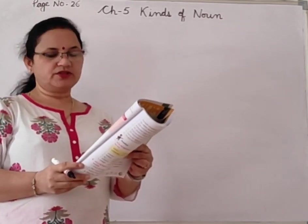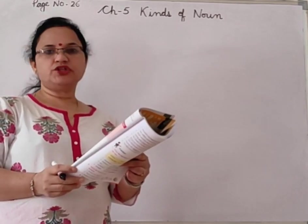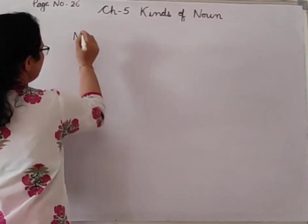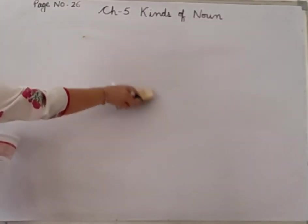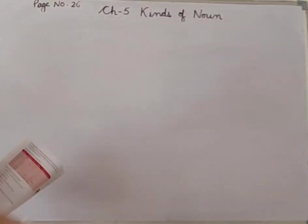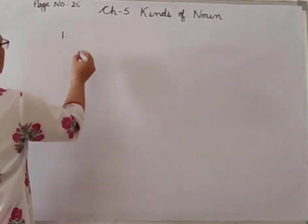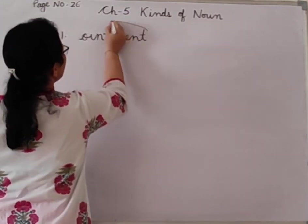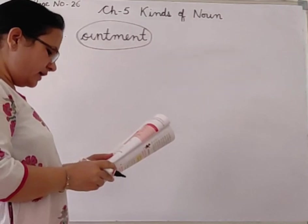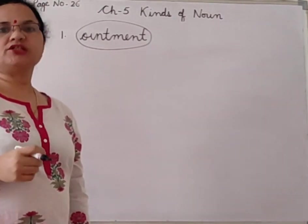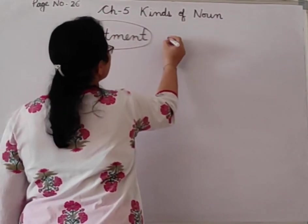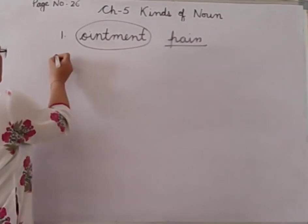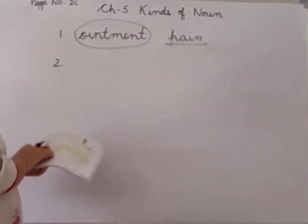Pain you cannot see, you cannot touch, you can only feel — so pain is abstract noun: underline pain. Second sentence on page number 27: 'The saint was respected for his wisdom.' Saint you can see — so circle saint. Wisdom you cannot see; wisdom can only be felt. So underline wisdom. Third: 'The soldier was rewarded for his bravery.' Soldier you can see — circle soldier. Bravery you cannot see, you can only feel — underline bravery.